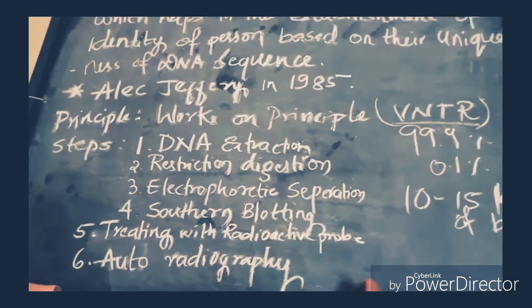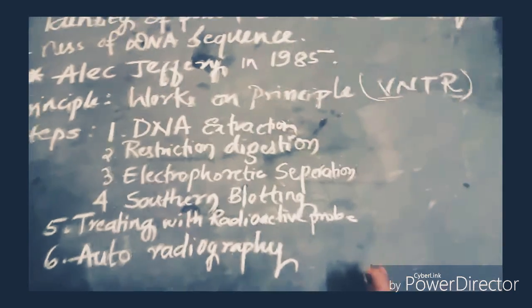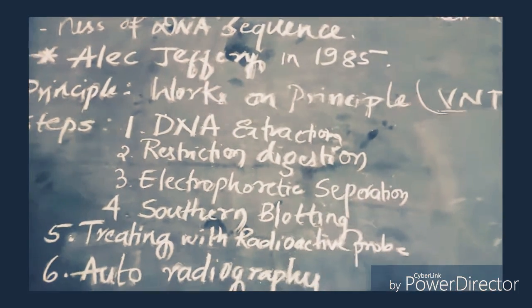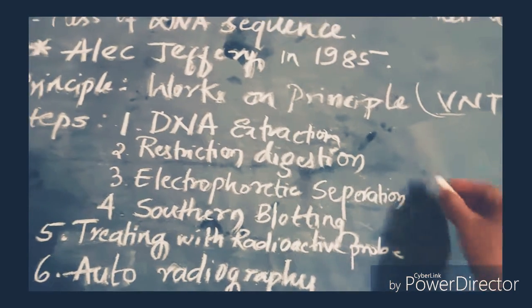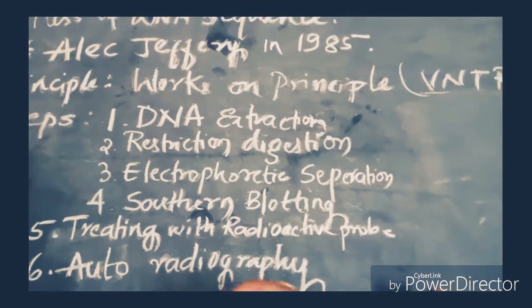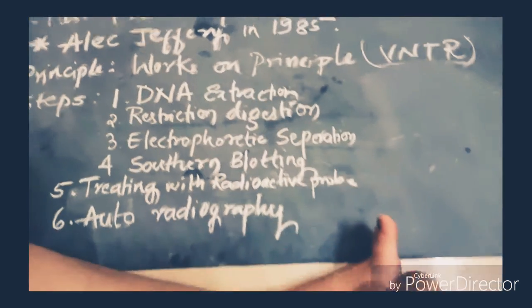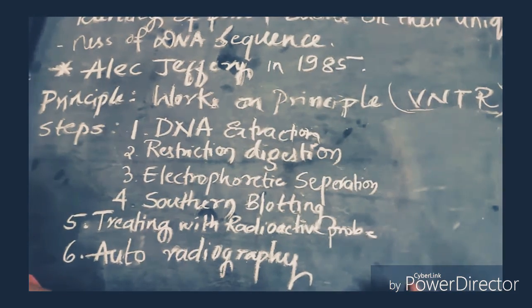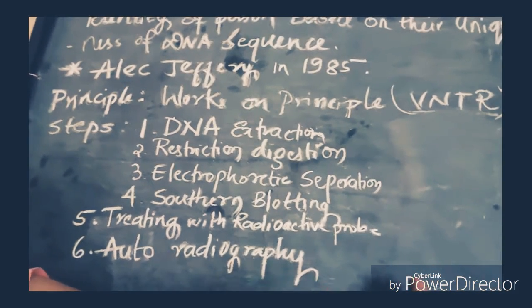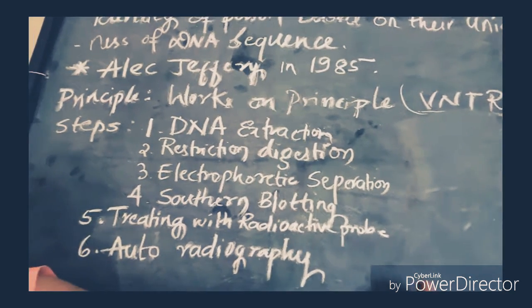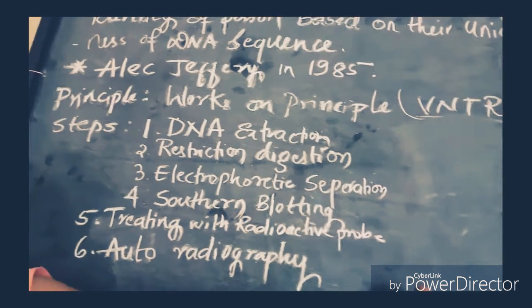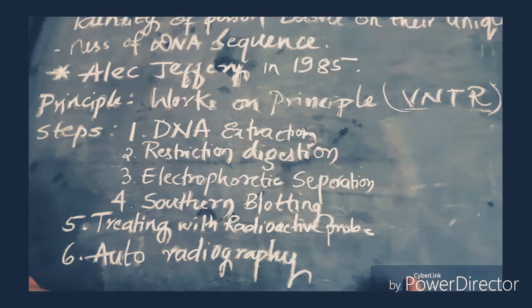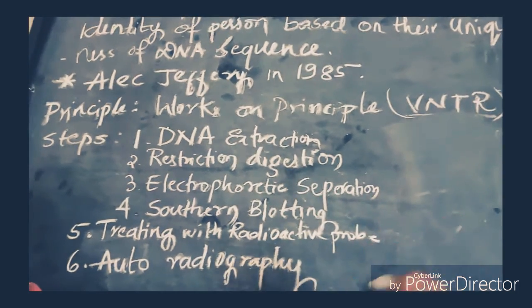The DNA fingerprinting involves the following steps. The first one is extraction of DNA. The DNA is extracted from the crime spot, taking the blood drop or the hair follicle, whatever things we get from the crime spot. We are extracting the DNA from the tissue or the blood.